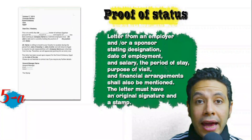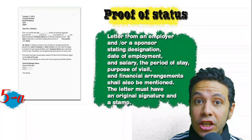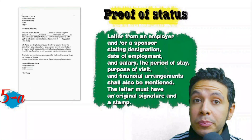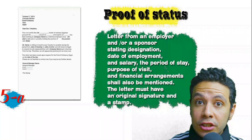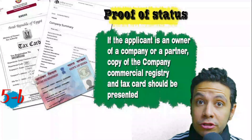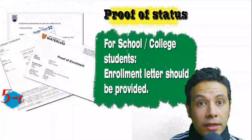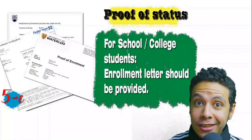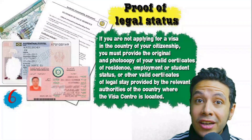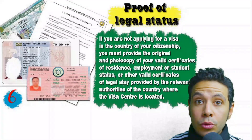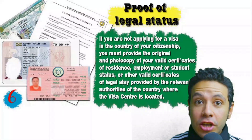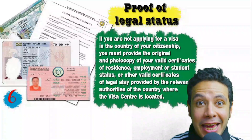If you are an employee, provide a letter from your employer or HR department mentioning your name, work details, salary, address, and contact numbers — with an original signature and stamp. If you own a business, submit your commercial registry and tax card. Students must provide an enrollment letter from their university or school. If applying from a country different from your own, provide a certificate of legal residence or a valid residence visa for that country.